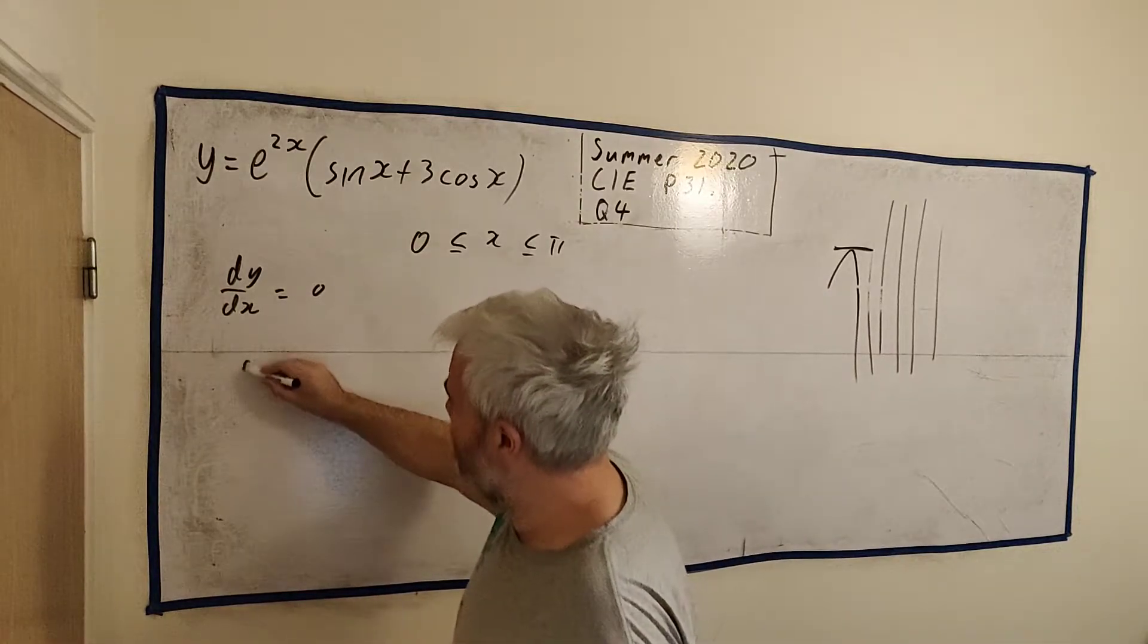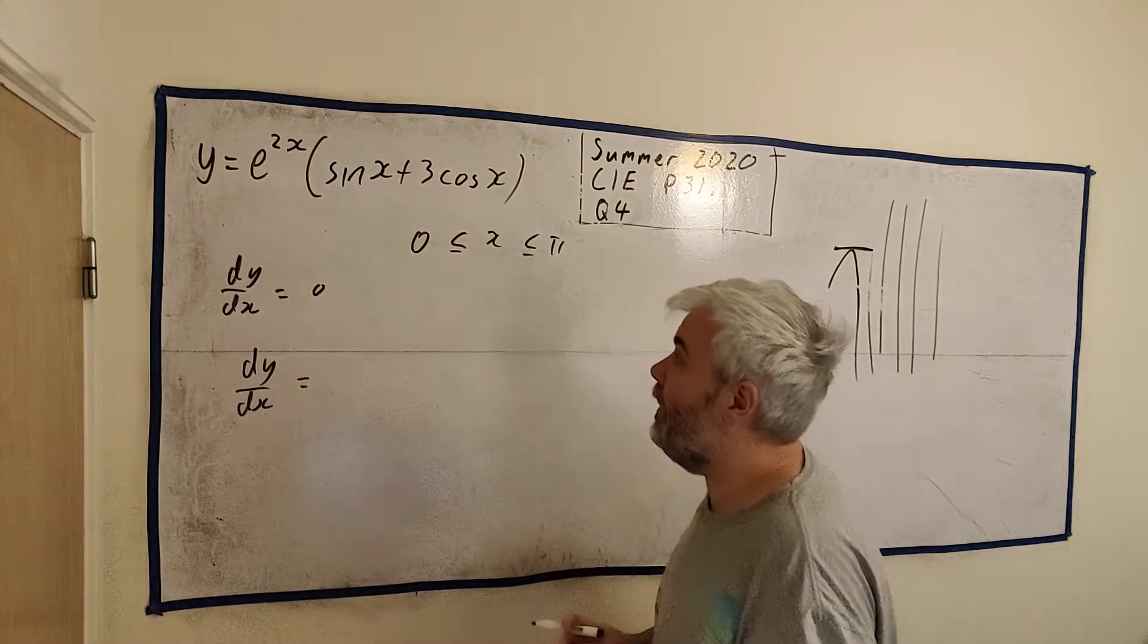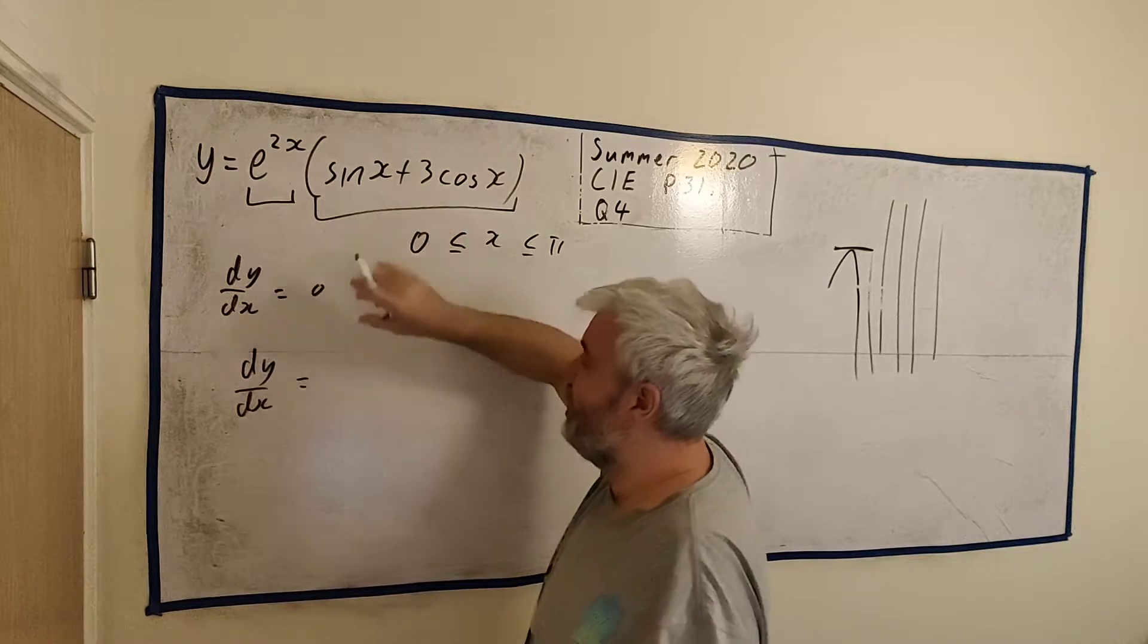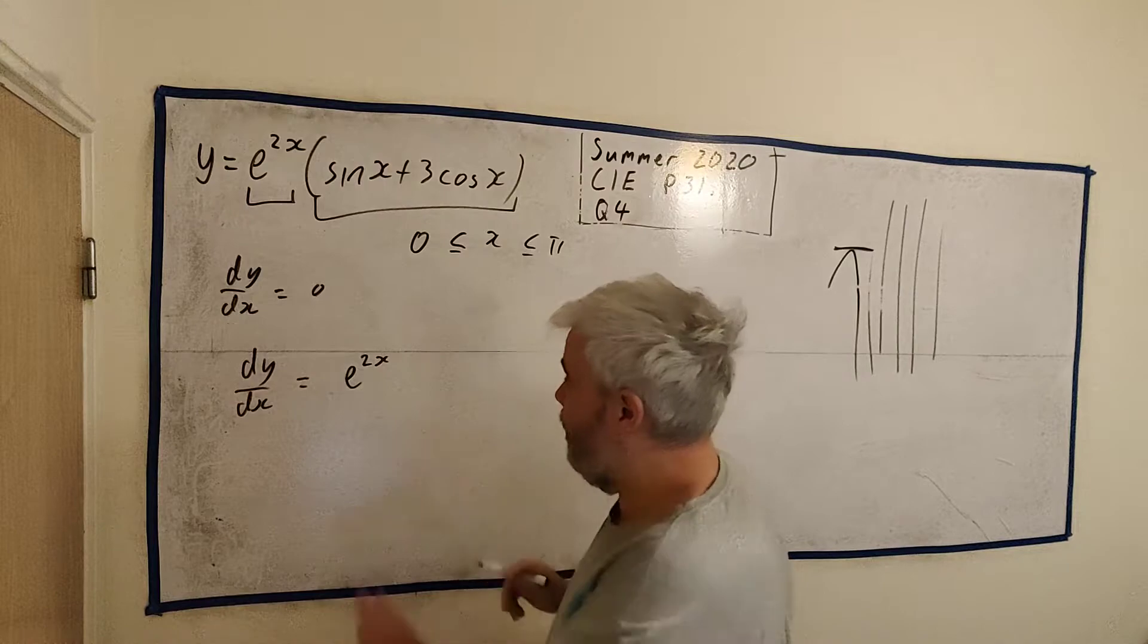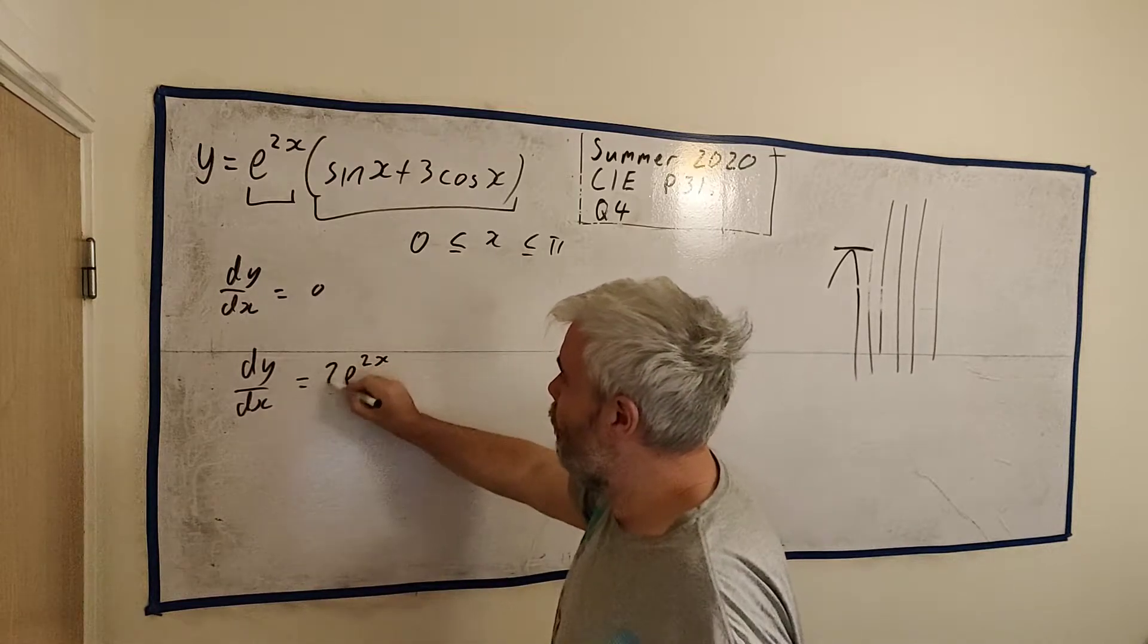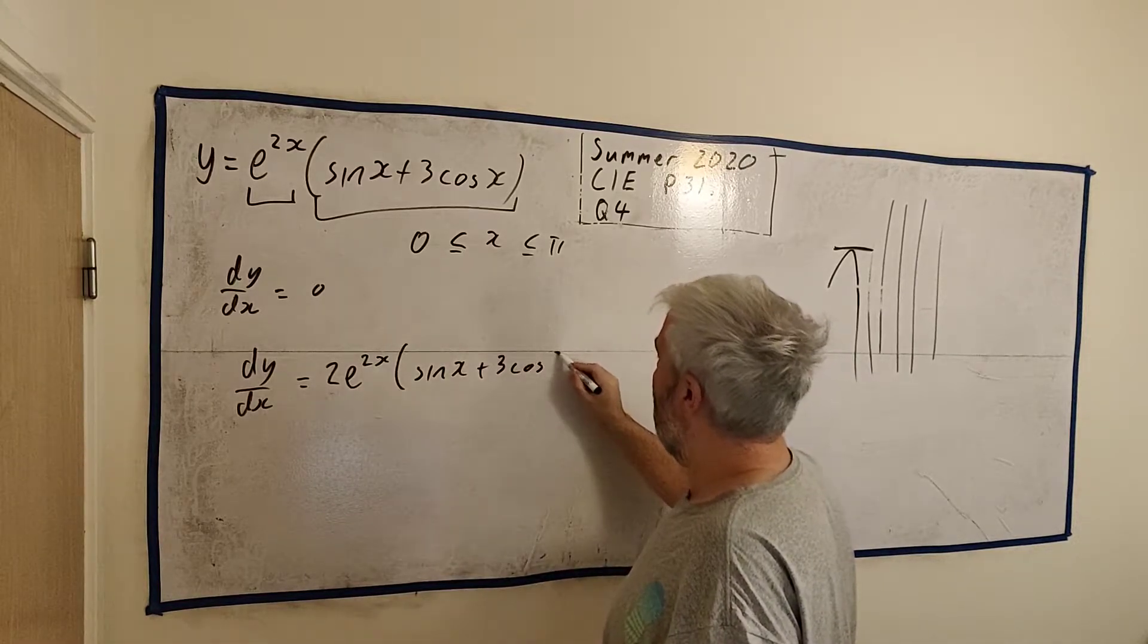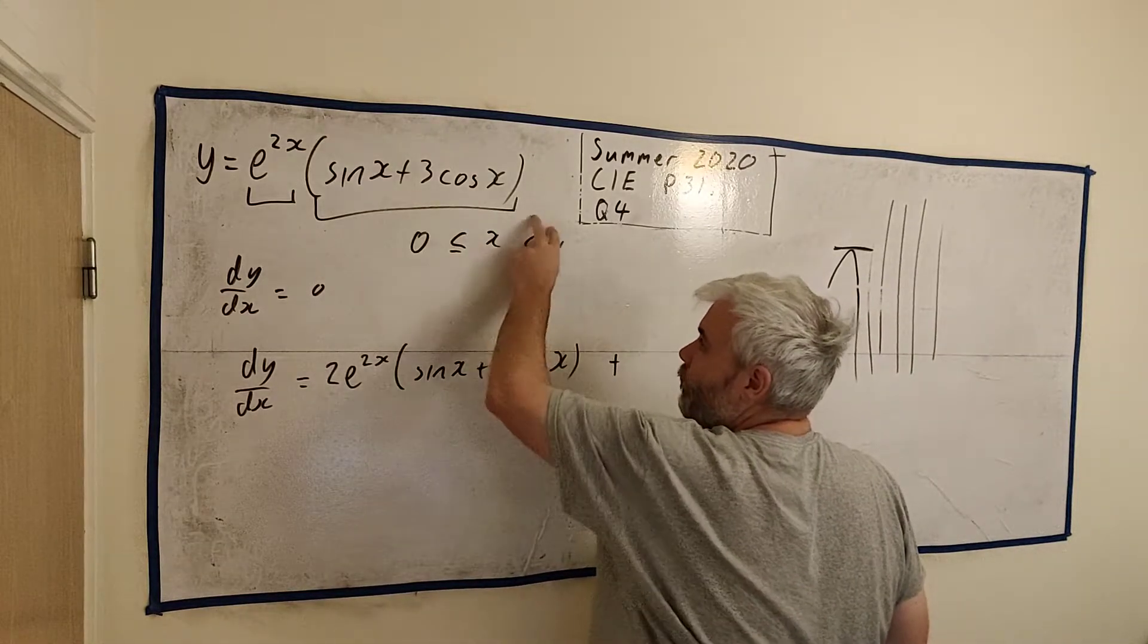So we want to get the stationary point so dy/dx will equal 0 at any stationary point because the slope of the tangent is 0. So we just need to differentiate this. We're going to use the product rule. We have two objects here, the first one and the second one. This is u and this is v. So let's differentiate the first one. We will get exponential to differentiate, nothing changes. We just have to use the chain rule and anything complicated up here which means a 2 will appear. And then we leave the second one alone. So we get sine x plus 3 cosine x.